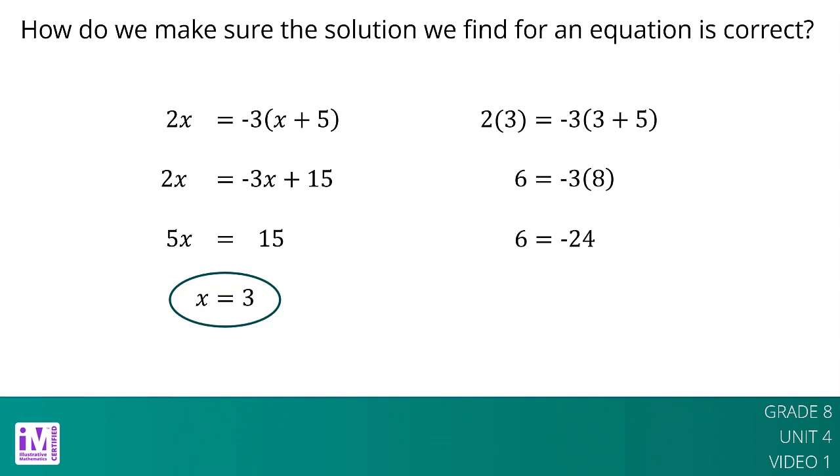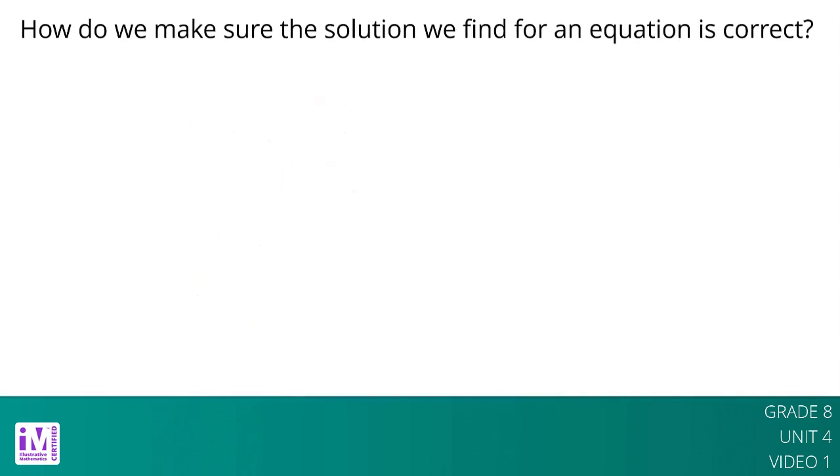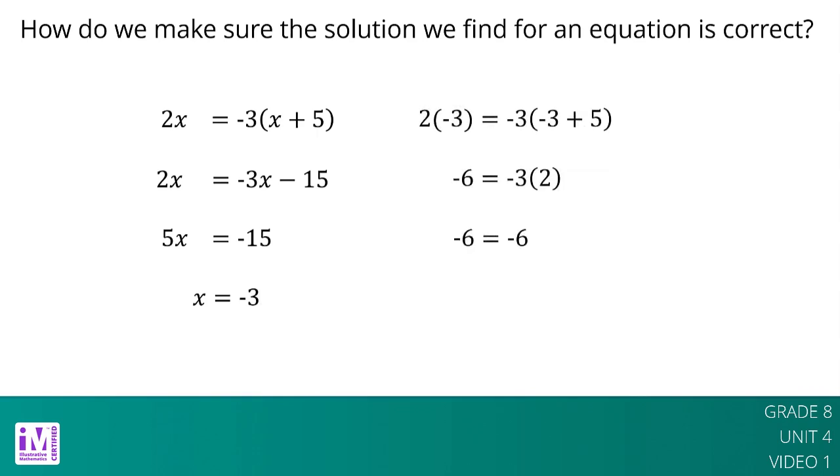Checking our original steps carefully, we made a mistake when distributing negative 3. Fixing it, we now have x equals negative 3 as the solution to the equation. We can substitute negative 3 in place of x into the original equation to make sure we didn't make another mistake. This equation is true, so x equals negative 3 is the solution.